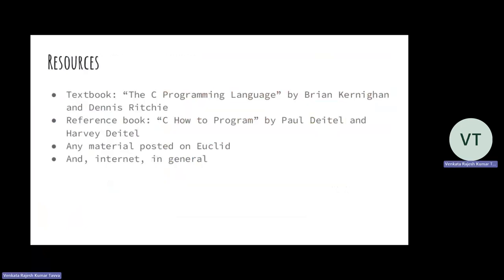These are the resources for the course. We have a textbook and a reference book. We will also post some other resources on Euclid — some notes, some PDFs, some articles. Even tutorial notes and lab sheets will also be your resources, and the internet in general is always a resource.